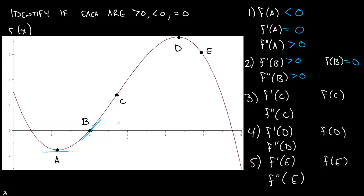Now let's take a look at c. Is f of c greater than 0, equal to 0, or less than 0? c is above the x-axis, so that's greater than 0. f prime of c — I draw my tangent line and I see that it's an increasing line, so it has a positive slope and is greater than 0. Now, f double prime of c — this is a good point where it looks like the concavity is switching: it's concave up here and concave down here. So I would say f double prime of c is equal to 0, in between a concave up and a concave down section.